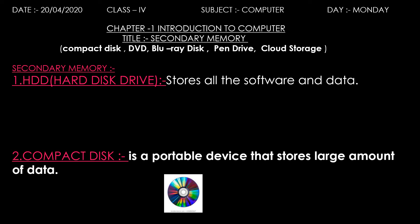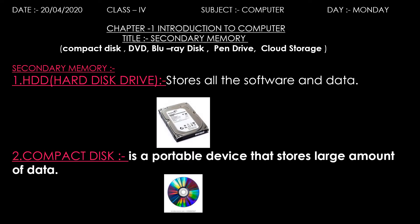Hello students, let's continue with Chapter 1: Introduction to Computer. In the last class we read about HDD, the hard disk drive, which is used to store all the software and data. Today we will learn about some other secondary memory like compact disk, DVD, Blu-ray disk, pen drive, and cloud storage.